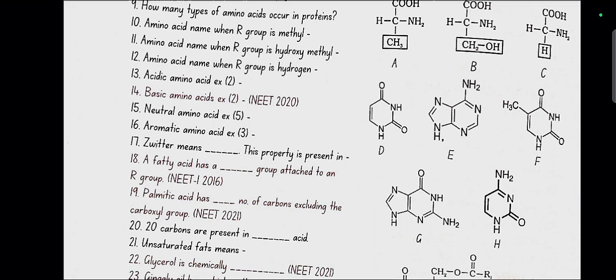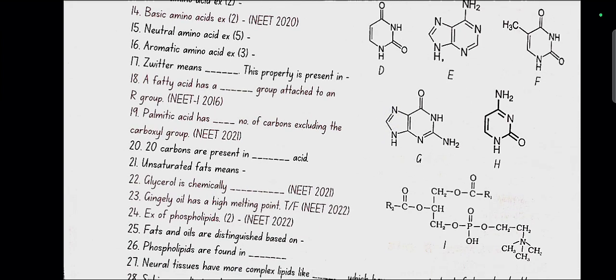Aromatic amino acid examples: tyrosine, phenylalanine, tryptophan. Zwitter means hermaphrodite and this property is present in amino acid.